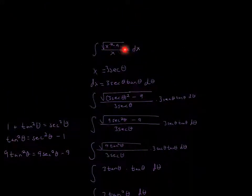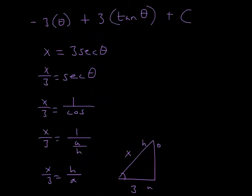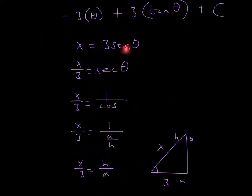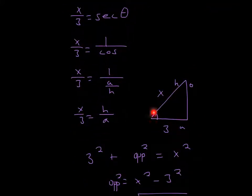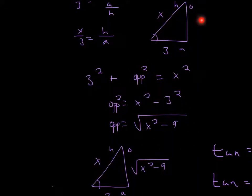We're not done yet, because the original equation is in terms of x and we did a trig substitution, so we need to change everything back into x form. Starting from x = 3 sec θ, we divide both sides by 3 to get x/3 = sec θ. Since secant is 1 over cosine, and cosine is adjacent over hypotenuse, secant is hypotenuse over adjacent. Drawing a right triangle, the hypotenuse is x, the adjacent side is 3, and using the Pythagorean theorem the opposite side is the square root of x squared minus 9.